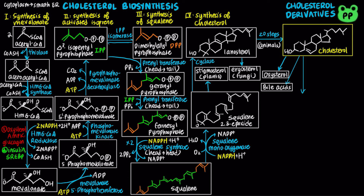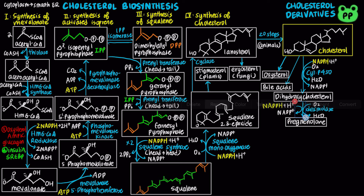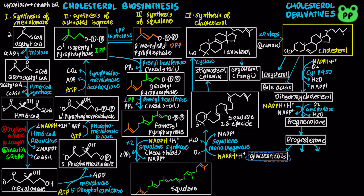Cholesterol is the precursor to all steroid hormones. First, cholesterol undergoes hydroxylation by the mixed-function oxidase cytochrome P450, to form dihydroxycholesterol, coupled to the reduction of oxygen to water and the oxidation of NADPH to NADP+. Next, dihydroxycholesterol undergoes another oxidation reaction catalyzed by desmolase, to form pregnenolone, which can be converted to progesterone in a couple of steps. Progesterone can then be converted to various steroid hormones, including glucocorticoids in the adrenal cortex, such as cortisol, which functions in metabolic regulation in response to short-term stress.